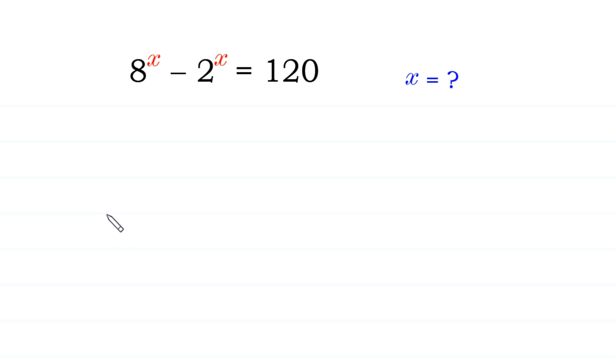Hello, welcome to how to solve this exponential equation: 8 to the power x minus 2 to the power x is equal to 120.